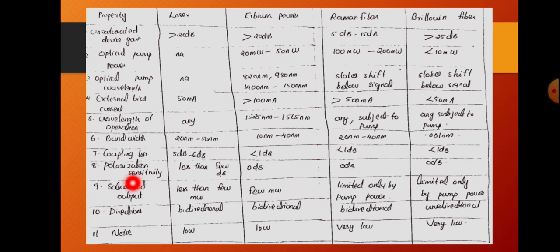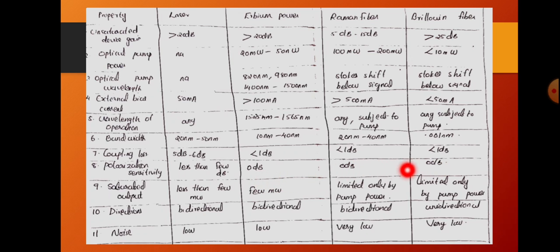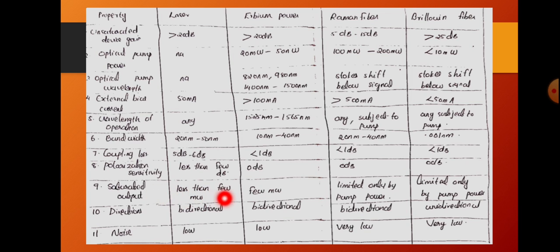When comparing polarization sensitivity, in the case of the laser it is less than a few dB. However, erbium fiber, Raman fiber, and Brillouin fiber are all polarization insensitive, so the corresponding values will be 0 dB for all three cases.